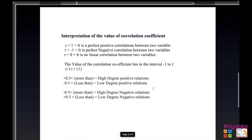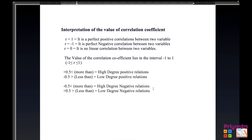Now here is some very important information related to this chapter — the interpretation of the correlation coefficient r. If the value of r is found to be 1, it means there is a perfect positive correlation between two variables. If the answer is minus one, it is called a perfect negative correlation. If r equals zero, there is no linear correlation between the two variables.